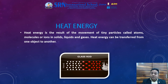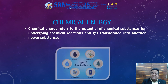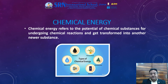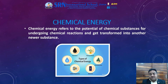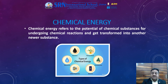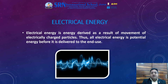Now let us see what is chemical energy. Chemical energy refers to the potential of chemical substances for undergoing a chemical reaction and getting transformed into new substances. Various processes called chemical processes form a new substance, and the released energy is called chemical energy. Now let us understand what is electrical energy.